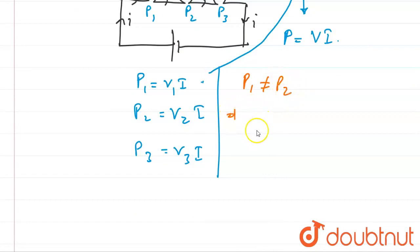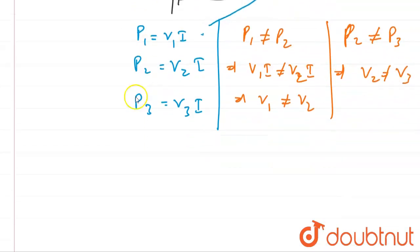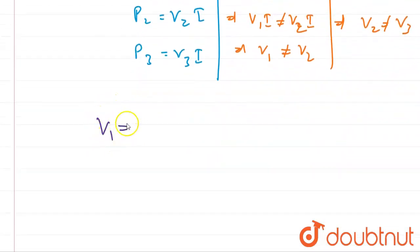P3 = V3 × I. Since P1 ≠ P2, then V1 × I ≠ V2 × I, which means V1 ≠ V2. Similarly, if P2 ≠ P3, then V2 ≠ V3. Finally, V1 ≠ V2 ≠ V3.